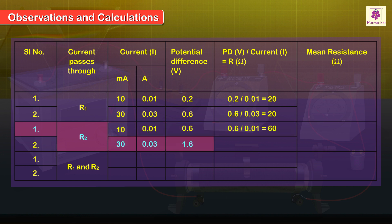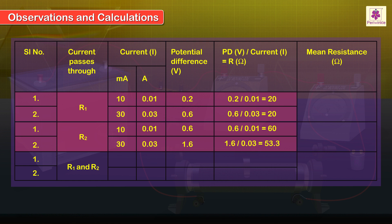For the second set of readings, R2 equals 1.6 divided by 0.03, which is 53.3 ohms. Now calculate the mean values of R1 and R2.